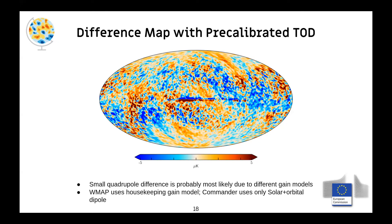We also did a difference map using the WMAP pre-calibrated data run through our pipeline. In that case, we get a 5 microkelvin difference. The question is understanding the difference between 2 and 5 microkelvin differences in temperature. So the results are pretty nice.